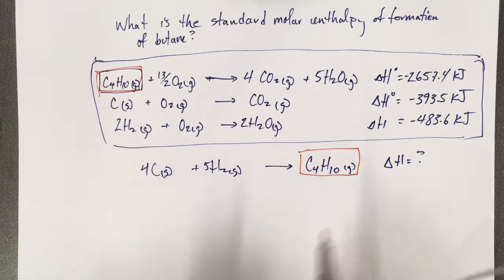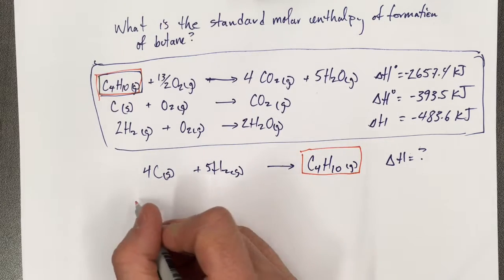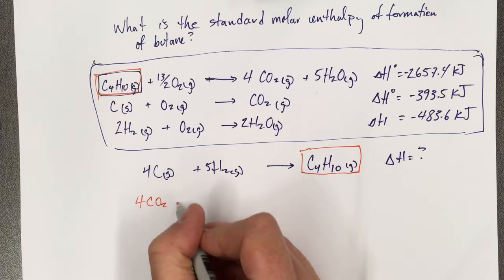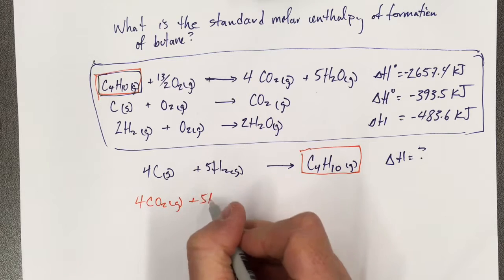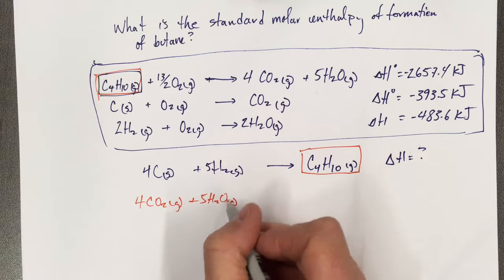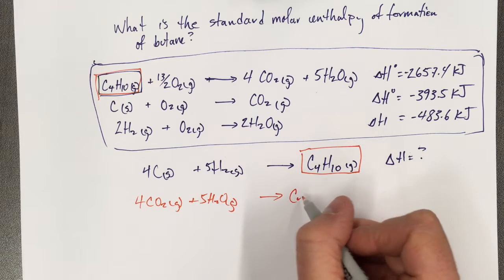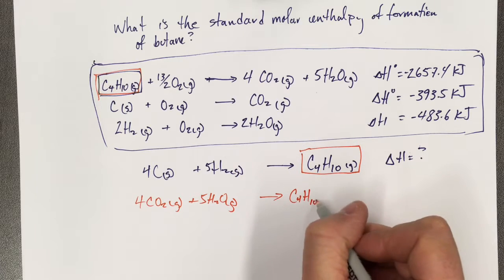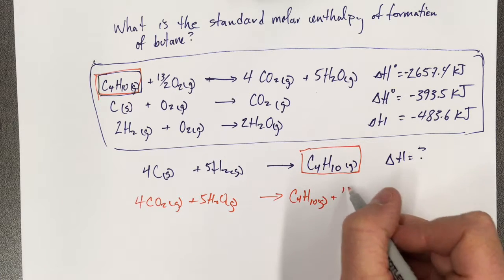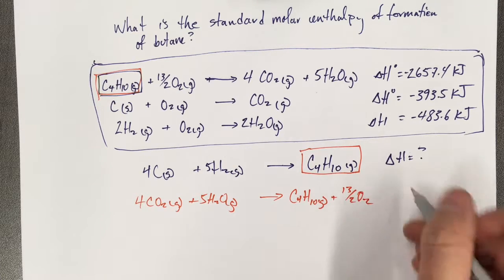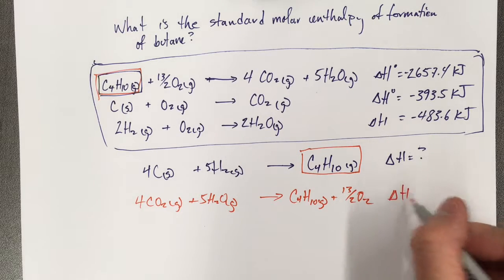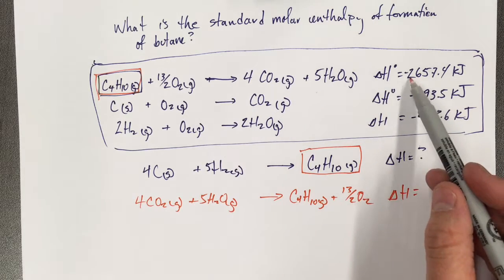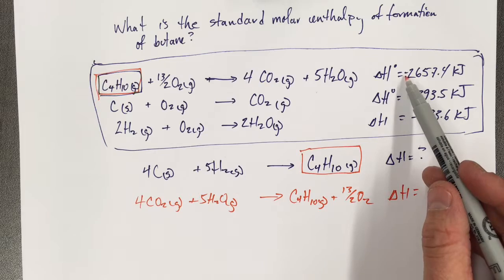I could get this into the products by reversing this reaction. So if I have 4 carbon dioxide gas and 5 water vapor, I can make butane gas and 13.5 oxygens. But the enthalpy of this is going to be the opposite, so it's not going to be negative, it's going to be positive.